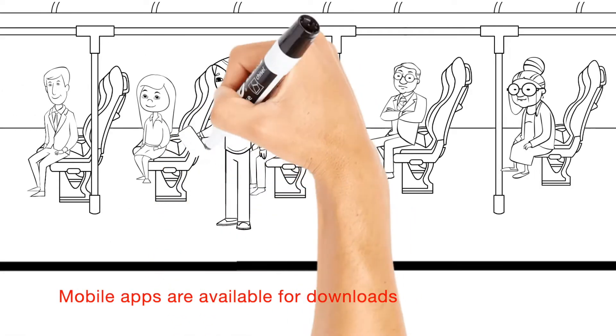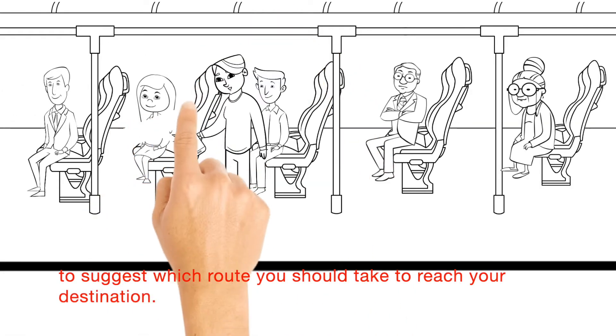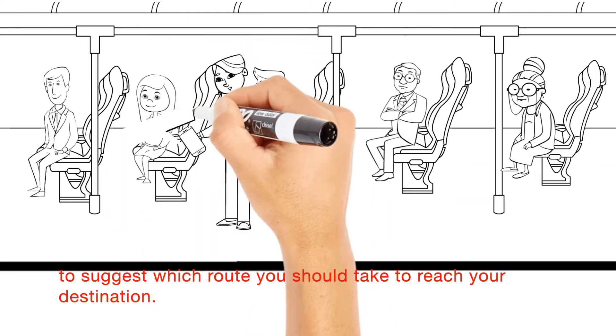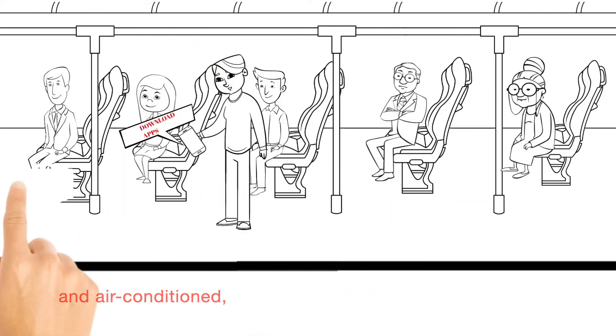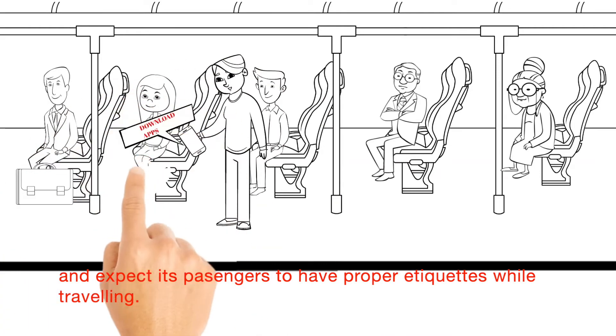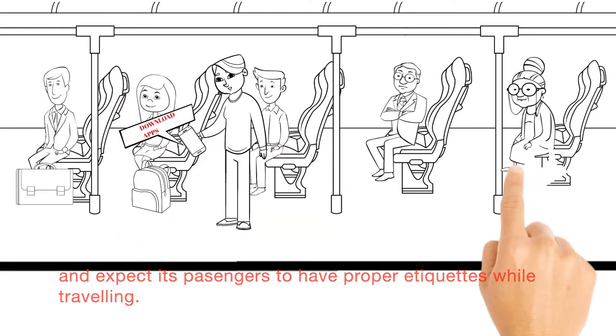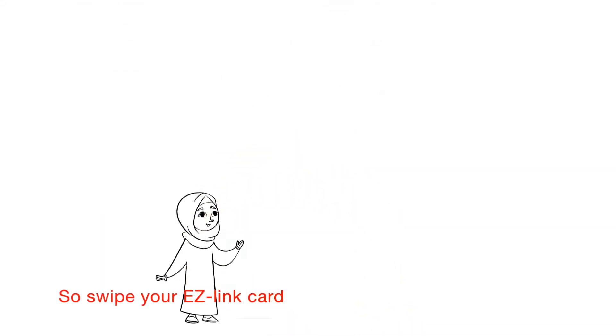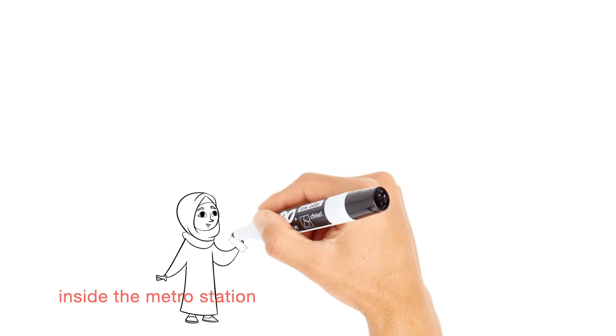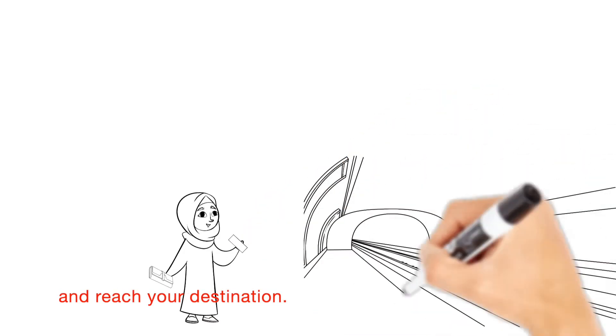Mobile apps are available for downloads to suggest which route you should take to reach your destination. All the public transports are clean and air conditioned and expect its passengers to have proper etiquettes while travelling.